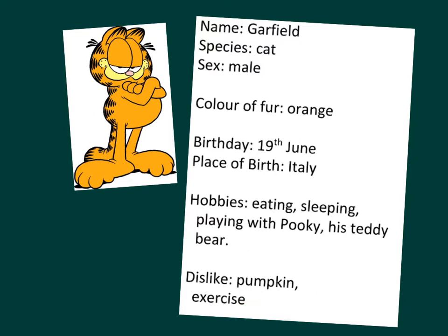Now it is writing time. I have some tips for you. You can use the first three pieces of information to make up a sentence. Talk about the colour of the fur in the second sentence. And then in the third sentence, talk about his birth in the past. In the last sentence, describe his hobbies and his dislike.